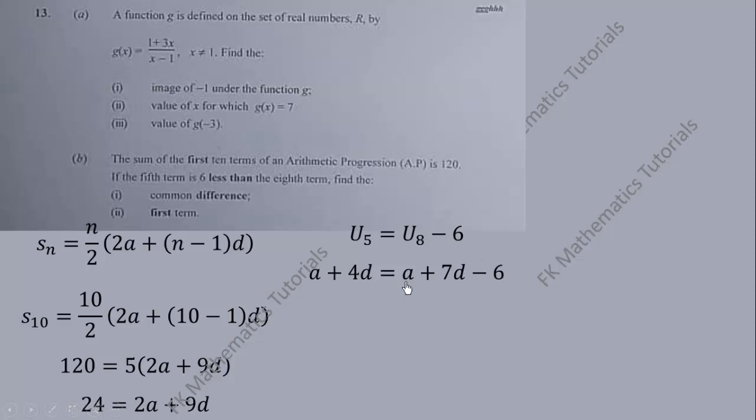The a terms cancel out. We group like terms: 7d - 4d. Subtract 4d from both sides, then add 6 to both sides. We get 6 = 3d, so d = 2. The common difference is 2.